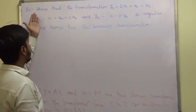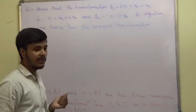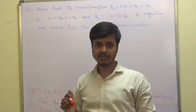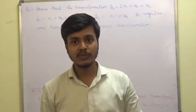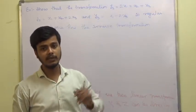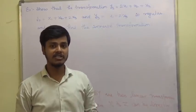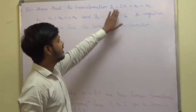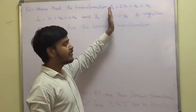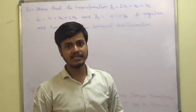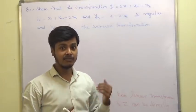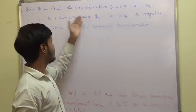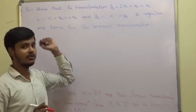To show the transformation is regular, we form a matrix from the coefficients, find its determinant, and if it is not equal to zero, the transformation is regular. Once regular, its inverse exists, meaning x1, x2, x3 will be expressed in terms of y1, y2, y3.